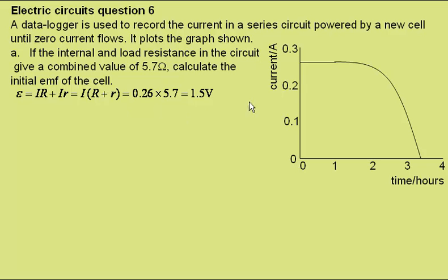The current from the graph is about 0.26 amps, and the combined resistance, big R plus little r, we're told is 5.7 ohms, giving an EMF of 1.5 volts.